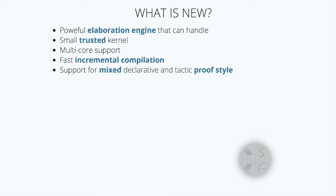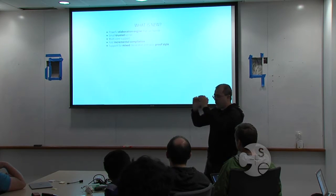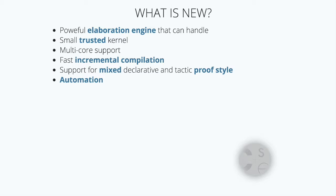We support a mixed declarative and tactic-proof style. Tactics, which many of you know from Coq, are more imperative: you instruct the theorem prover to unfold this definition, apply this induction, apply this theorem. The declarative style is where you say 'I have this fact' without saying how to get it — you just state that it should be obvious from what you have. And we have a strong focus on automation. I will talk about one example of automation, a procedure we have implemented.